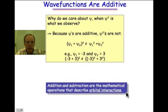Addition and subtraction are the mathematical operations that describe orbital interactions. Atomic orbitals that interact produce molecular orbitals, and molecular orbitals are really what we're looking for in describing chemical bonding.